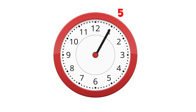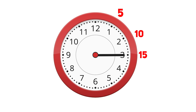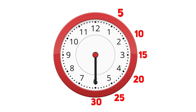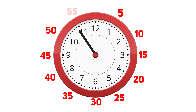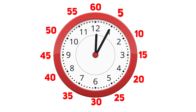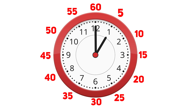1 is interpreted as 5, 2 as 10, likewise 3 as 15, 4 as 20, 5 as 25, 6 as 30, 7 as 35, 8 as 40, 9 as 45, 10 as 50, 11 as 55, and 12 as 60. When the minutes hand reaches 60, the hours hand will move by 1, indicating that 60 minutes make 1 hour.